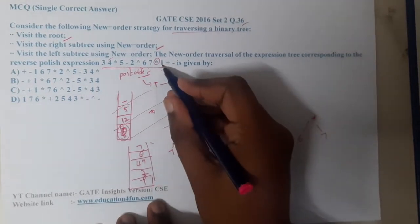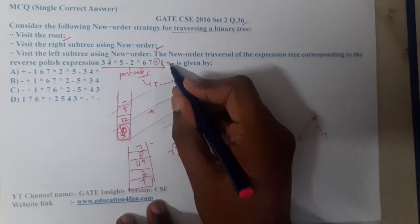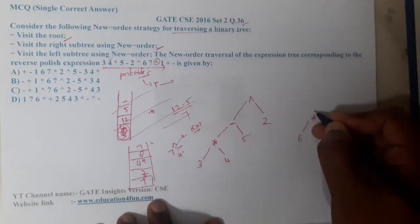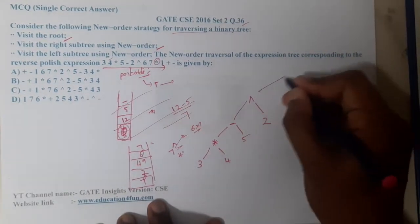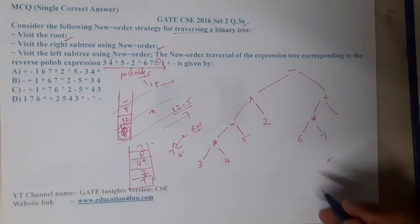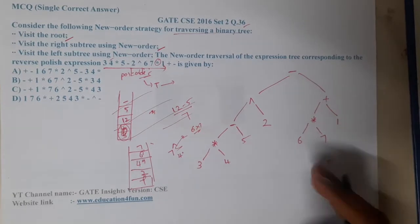So after 1 we got plus. So 1 is adding with the previous result. So let us add it. At the end, these two are subtracting. You can just solve it in this way. So now we got the tree.